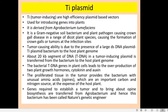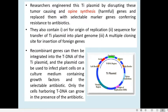Therefore, the Ti plasmid of Agrobacterium contains all genes required to establish the tumor in the plant, genes to bring about the biosynthesis of opines, and genes for getting itself integrated into the host cell genome. That is why it is called nature's genetic engineer. Now we come to its use as a vector for recombinant DNA technology experiments.